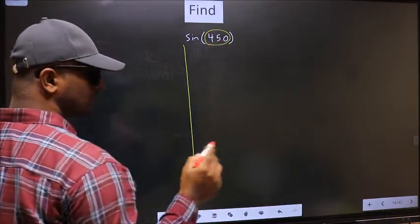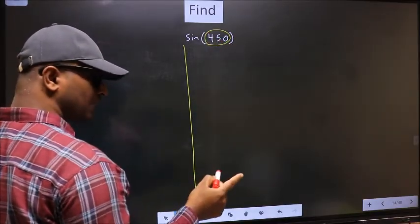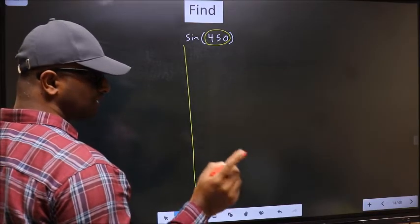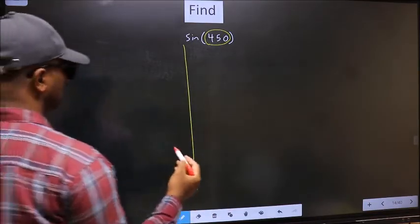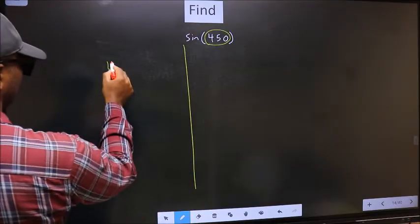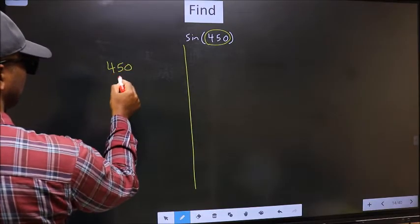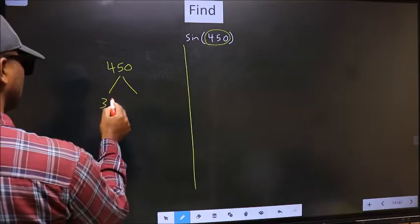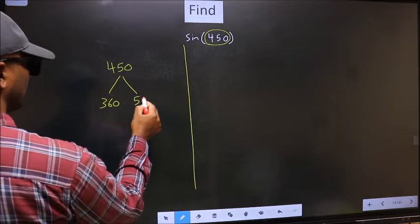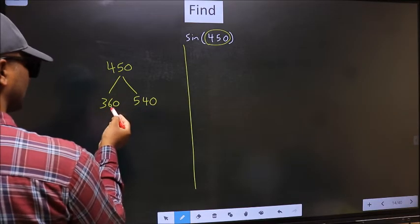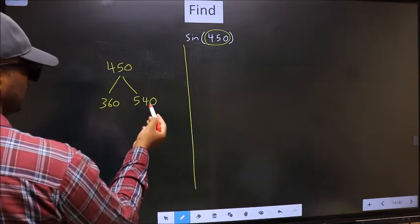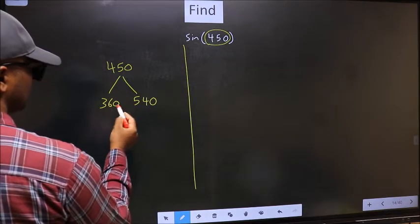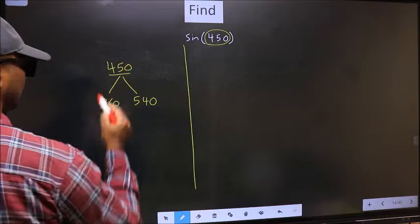Now you should check 450 lies between which two multiples of 180. What I mean is 450 lies between 360 and 540. This is 180 times 2 and this is 180 times 3. Between these two numbers 450 lies.